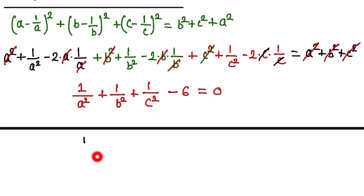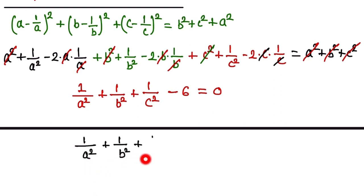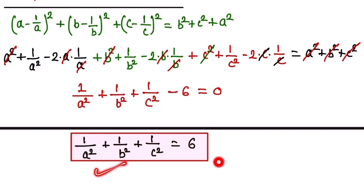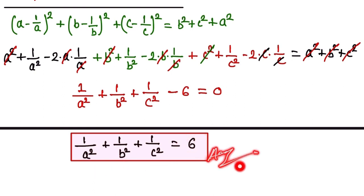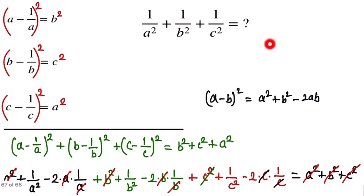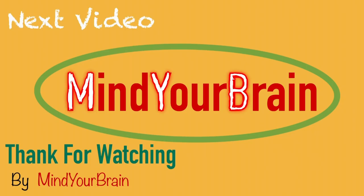Therefore, 1/a² + 1/b² + 1/c² = 6. This is the final answer. Thank you so much for watching. If you like the video, please subscribe to our channel and share it with your friends. Thank you so much.